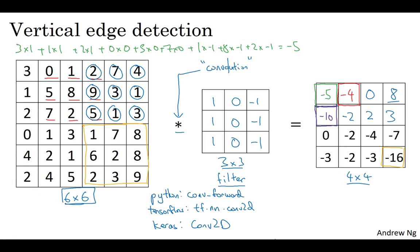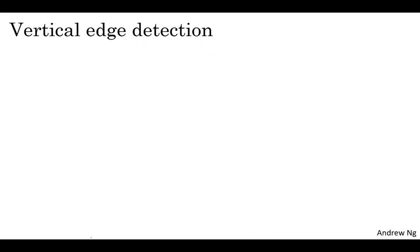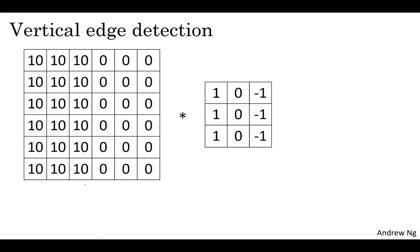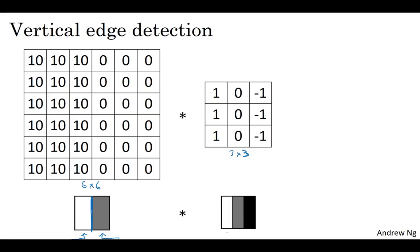So why is this doing vertical edge detection? Let's look at another example to illustrate. We're going to use a simplified image: a simple six-by-six image where the left half of the image is ten and the right half is zero. If you plot this as a picture, the left half — the tens — give you brighter pixel intensity values, and the right half gives you darker pixel intensity values. In this image, there's clearly a very strong vertical edge right down the middle as it transitions from white to black. When you convolve this with the three-by-three filter — which has lighter pixels on the left, zeros in the middle, and darker on the right — you get this matrix on the right.